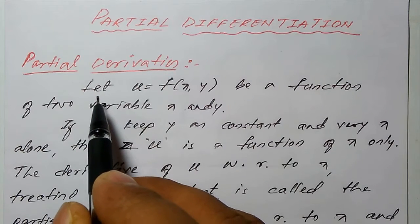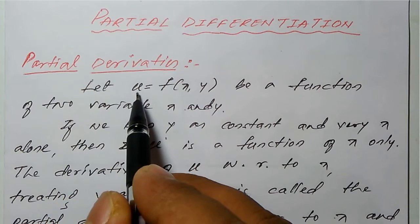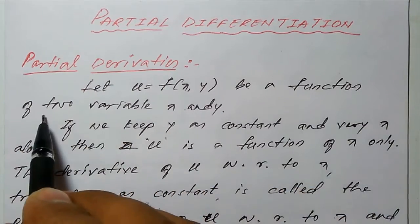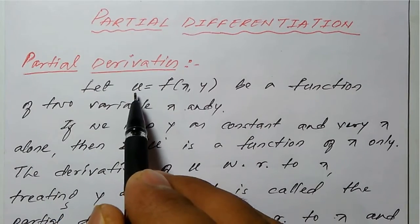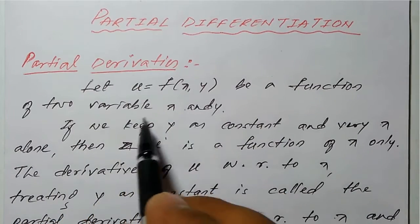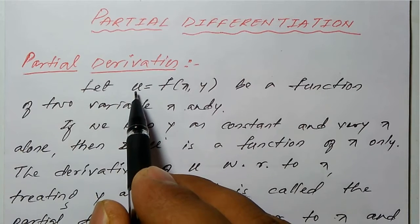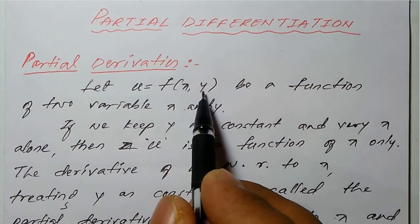Generally, let u be a function of two variables x and y, so u equals f of x and y. If I want to differentiate u with respect to x partially, then at that time I have to treat y as a constant.